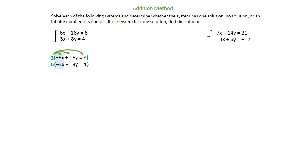Now we're going to distribute. The negative 3 multiplied by the entire first line gives you positive 18x minus 48y equals negative 24. And the positive 6 multiplied by the entire second line gives you negative 18x plus 48y equals positive 24.